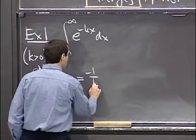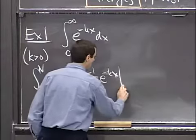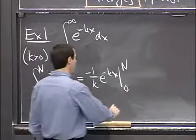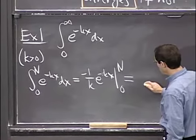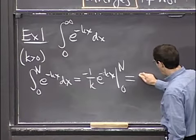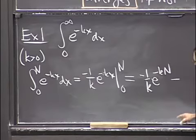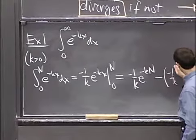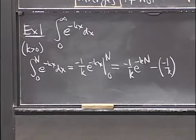It's minus 1 over k e to the minus kx, that's the antiderivative, evaluated at 0 and n. And that, if I plug in these values, is minus 1 over k e to the minus k N minus, and if I evaluate it at 0, I get a minus 1 over k times e to the 0. So there's the answer.